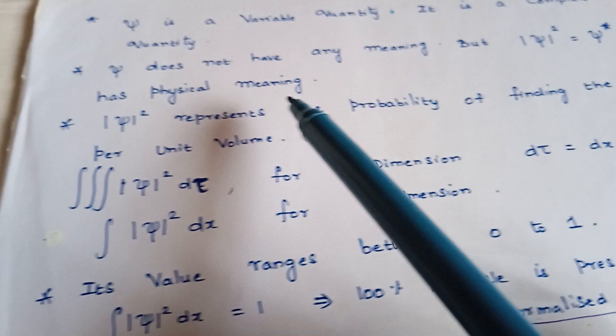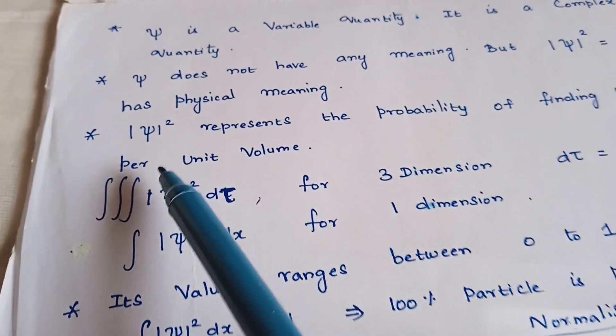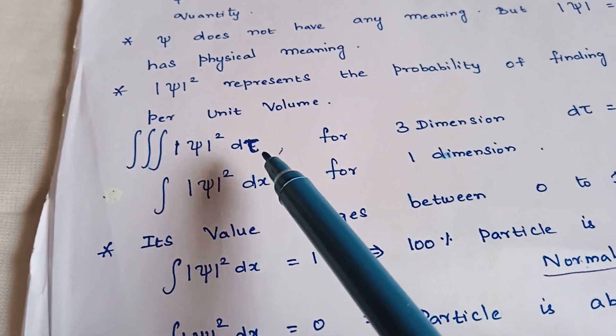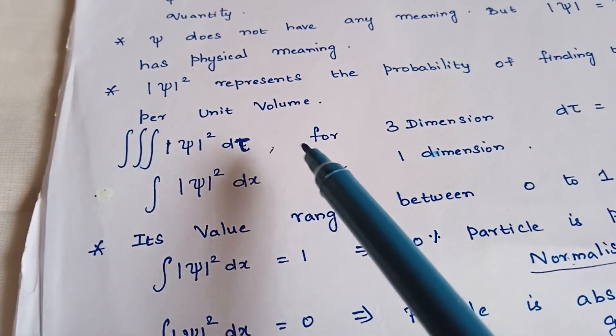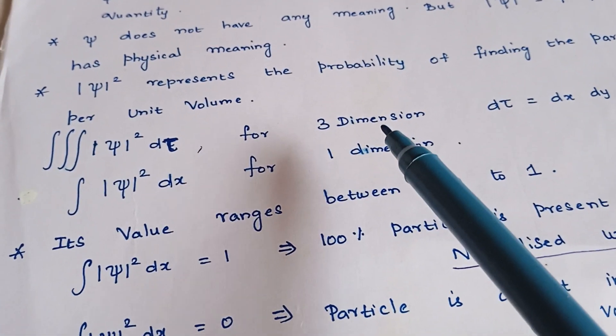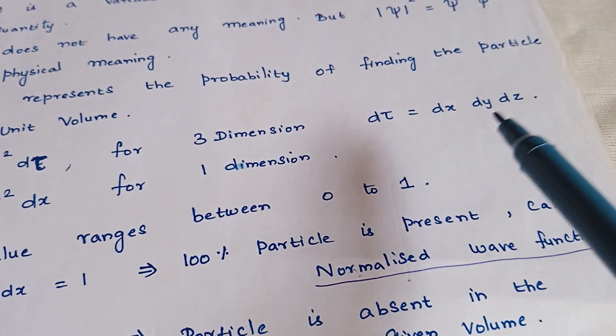Modulus of psi square represents the probability of finding the particle in the given volume. The triple integral mod psi square d tau is the representation for the probability of finding the particle in a three dimensional space, where d tau is dx dy dz.